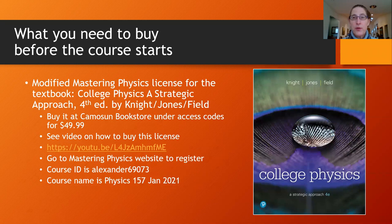When you go to the bookstore, the key is you don't click on textbooks — you click on access codes. Now if you're really keen to register, you can go ahead and do that as well, but I will send out a document on how to register for Mastering Physics.